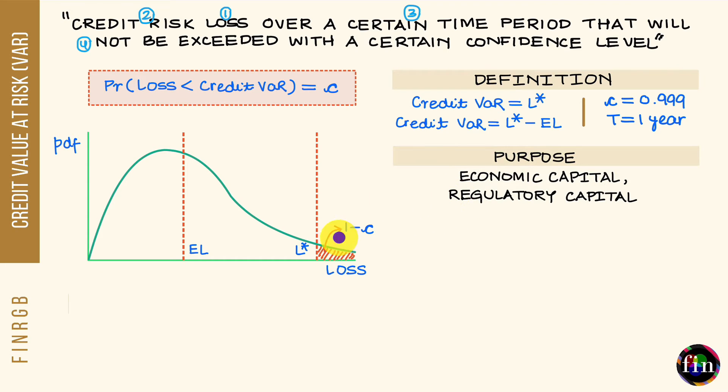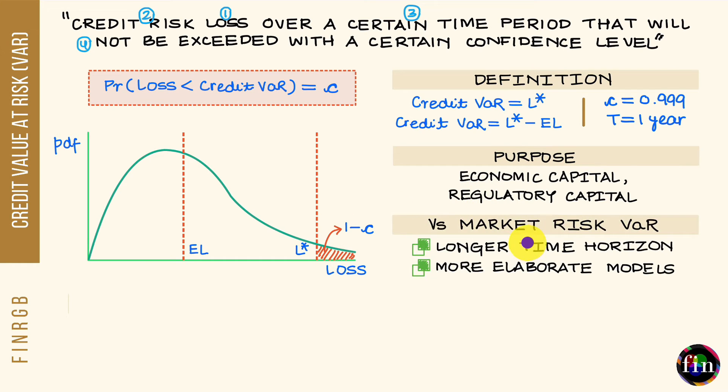Now how does credit VAR differ from market risk VAR? Market risk VAR is a type of VAR which we are very familiar with. How are these two types of VAR different from each other? Well, note this, that when it comes to credit VAR, the choice of horizon is one year. For market risk VAR, the horizon is very short. It can be one day, it can be let us say 10 days.